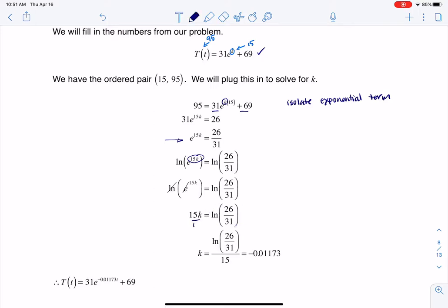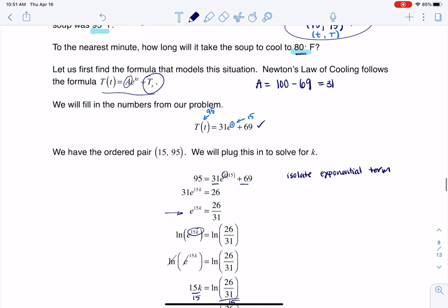Then what I need to do is divide both sides by 15, and I get my k value. So there is my model for Newton's law of cooling, and that seems like plenty right there, but we're still not done with the problem.